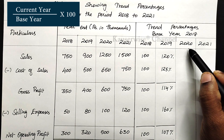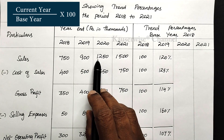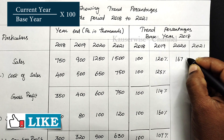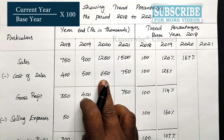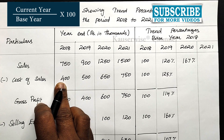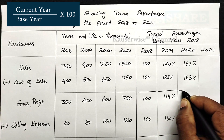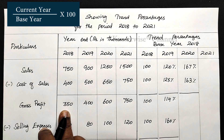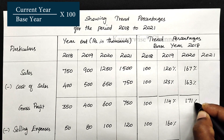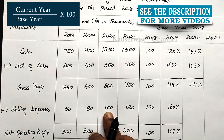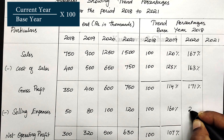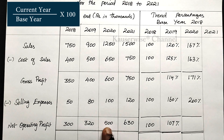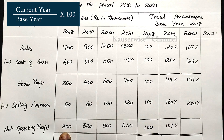In the same way, we calculate trend percentage for 2020. For sales: 1150 divided by 750 into 100 gives approximately 167%. For cost of sales: 650 divided by 400 into 100 gives 163%. For gross profit: 600 divided by 350 into 100 gives 171%. For selling expense: 100 divided by 50 into 100 gives 200%. For net operating profit: 500 divided by 300 into 100 gives 167%. Round off any decimals as needed.